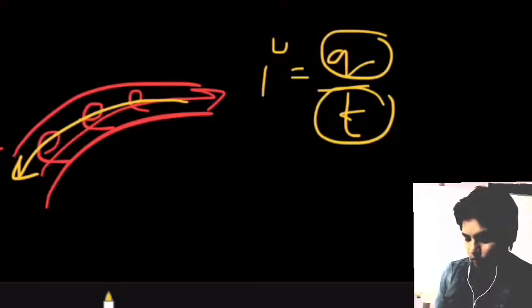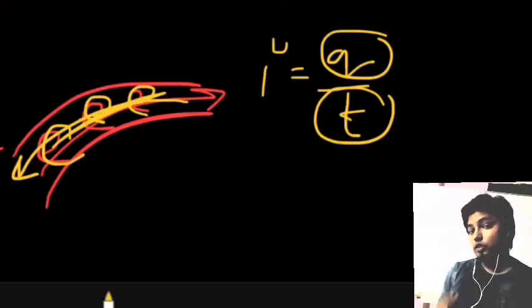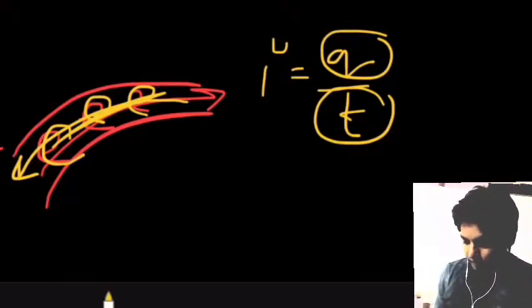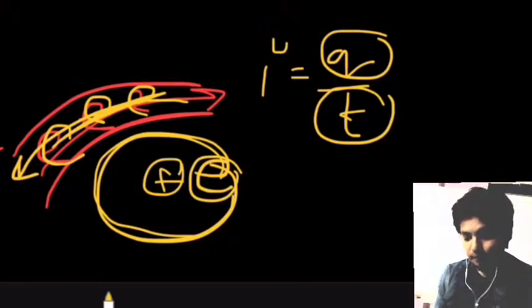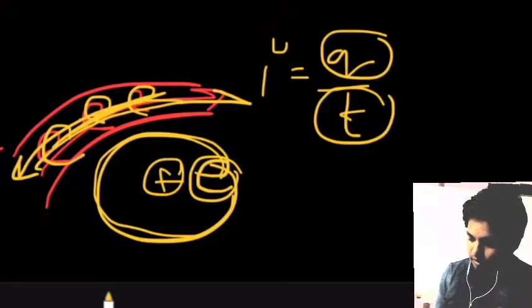The problem is understanding why electrons are free in the conductor. We know that electrons are revolving around the nucleus. If electrons are revolving around the nucleus, how can they also move freely in a conductor? There must be something that allows this.